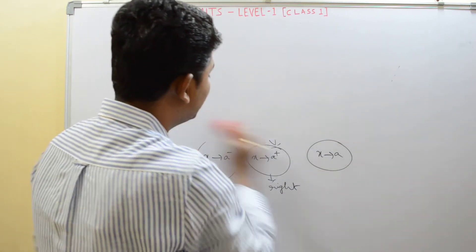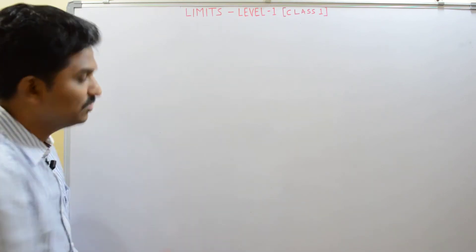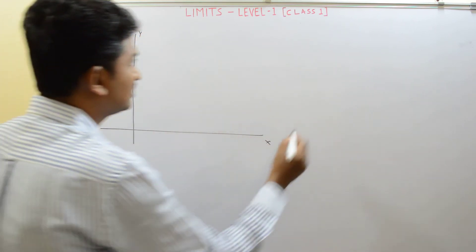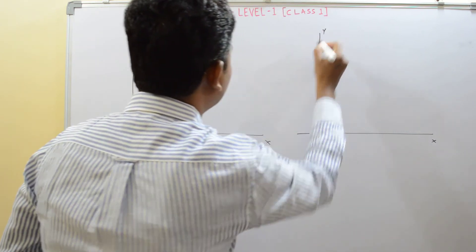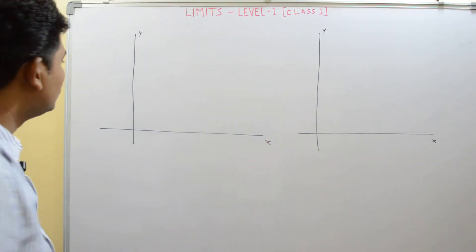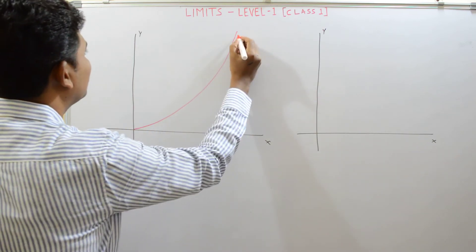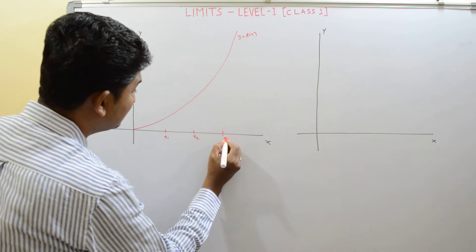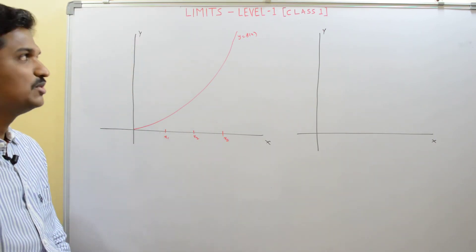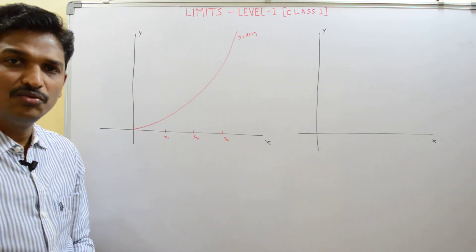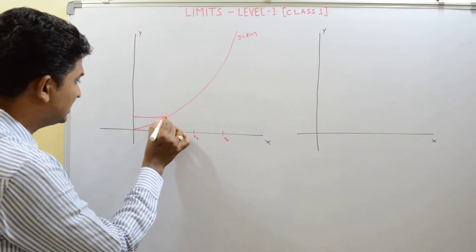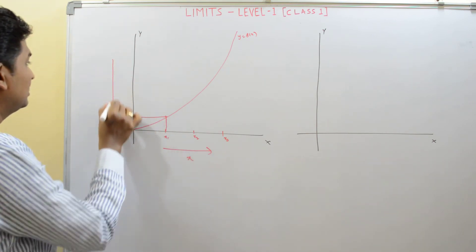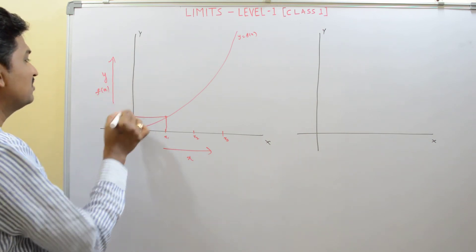One more point that is definitely useful — let's look at a graph Y equals F of X. Take x1, x2, x3 as x values on the x-axis. When you substitute x1 in the function, you get a functional value F of x1 on the y-axis. The point on the graph is (x1, F of x1). These are all x values on the x-axis, and all functional values are on the y-axis.